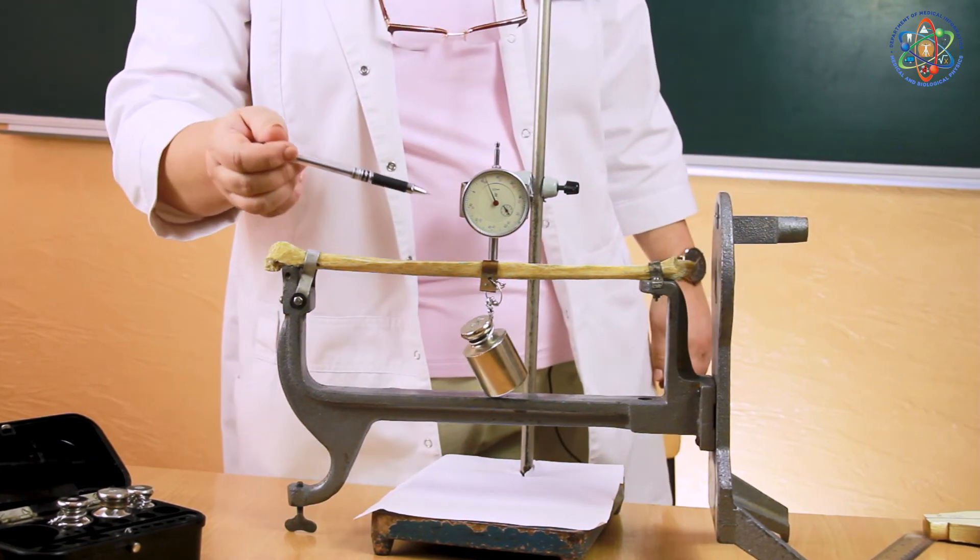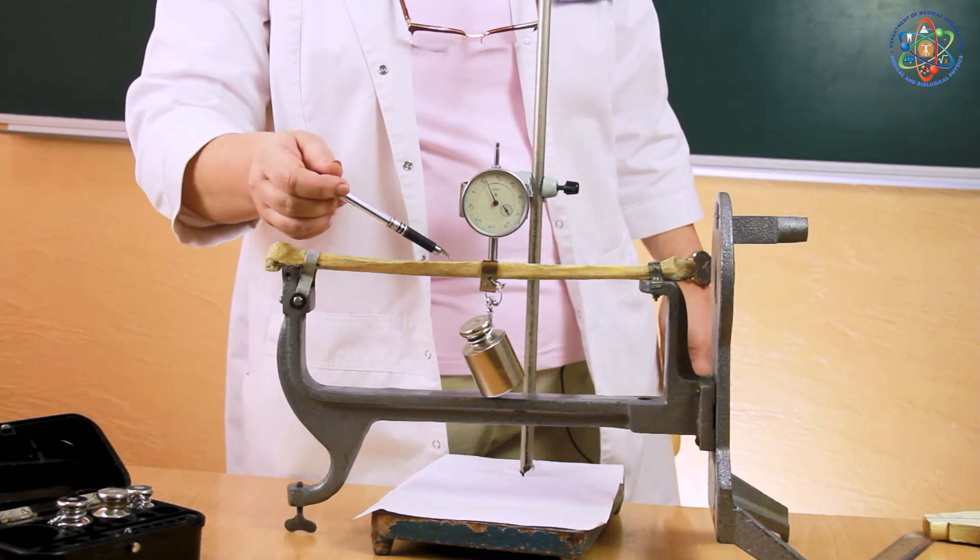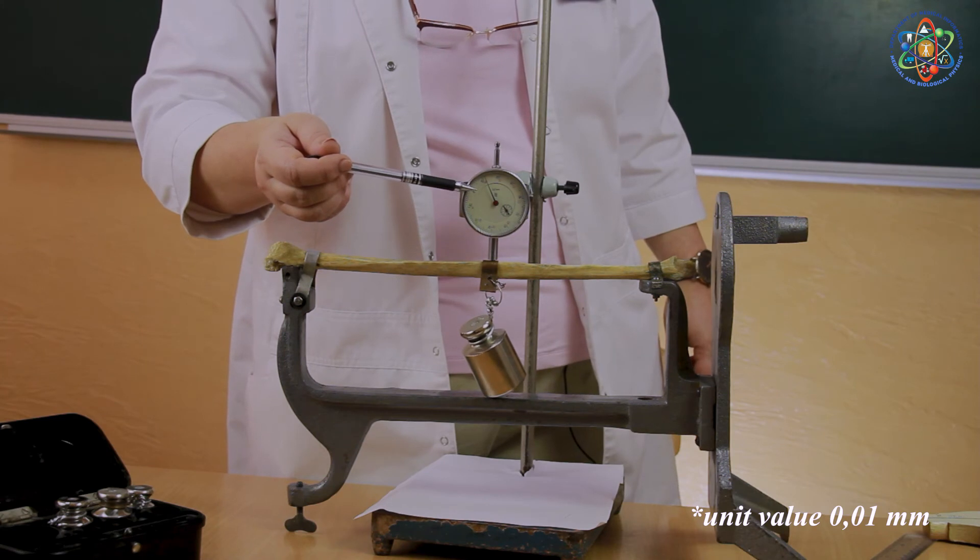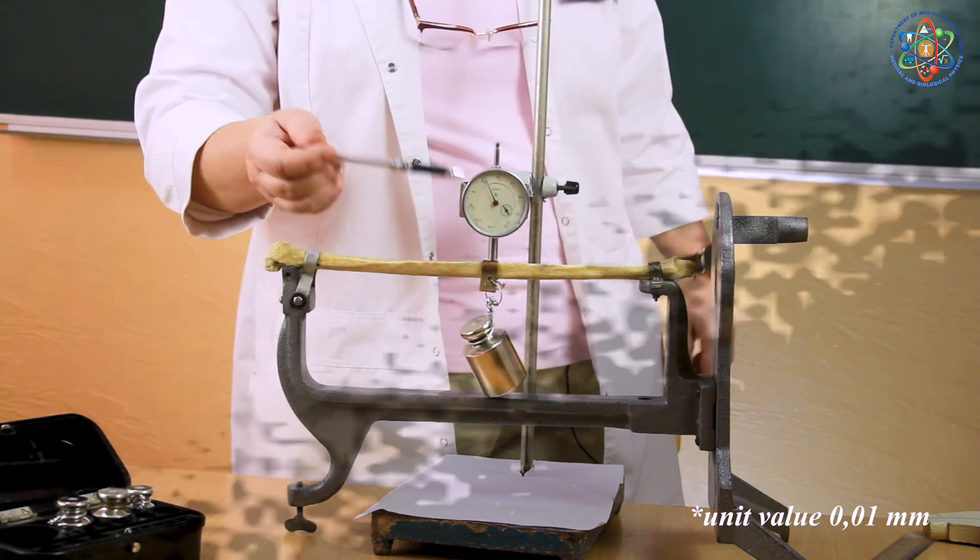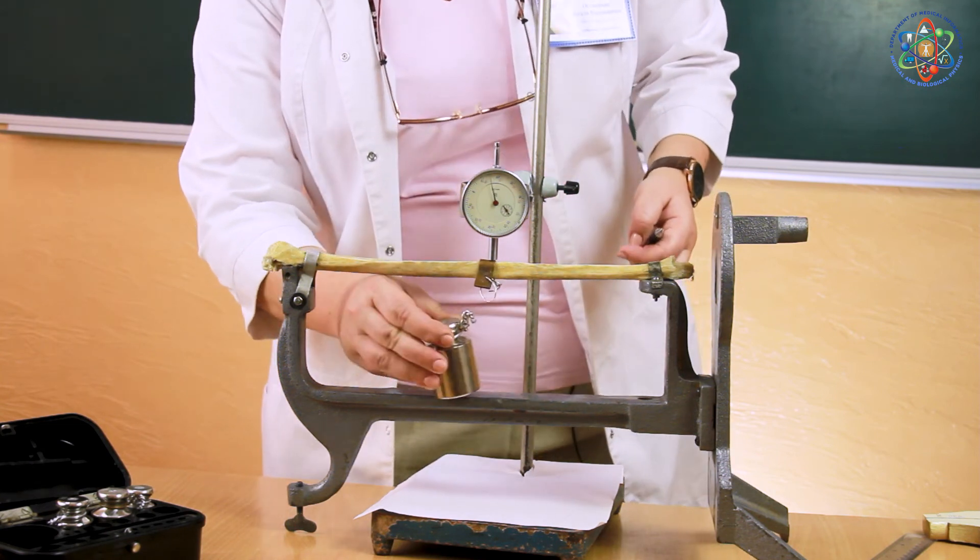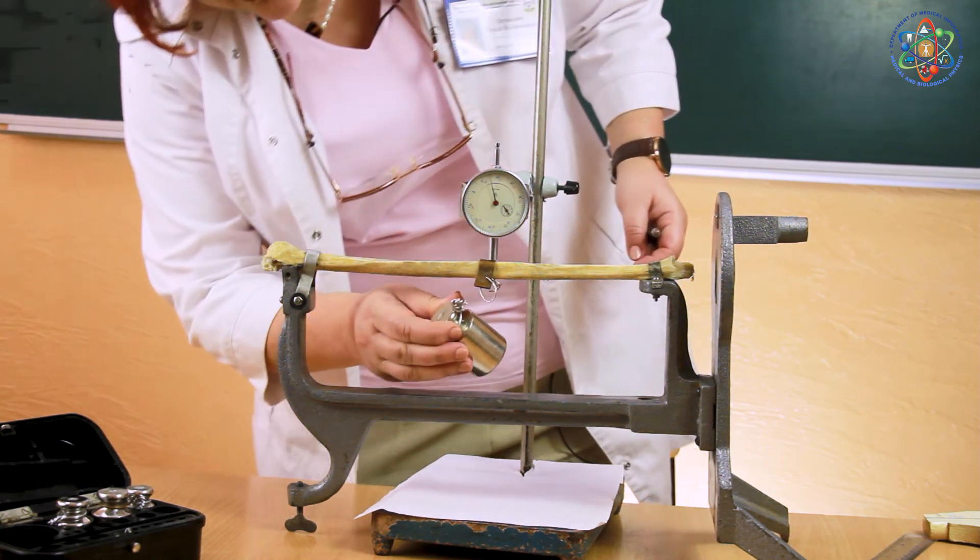After that, we measure the value of the bone deformation with the help of the indicator scale. The unit value of the indicator is 0.01 mm. We apply the load to the bone with the help of the same weight piece two more times.